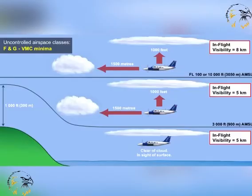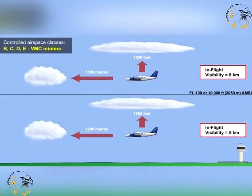Visual meteorological conditions, or VMC, are meteorological conditions expressed in terms of visibility and vertical and horizontal distance from clouds and cloud ceiling, which are equal to or better than specified minima. These VMC minima depend on the class of airspace an aircraft is flying in and the aircraft's altitude or flight level.